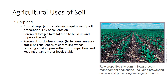Perennial forages, such as alfalfa, are in the ground for a few years. They may be harvested as hay to feed animals or be used for grazing. These crops cover the soil completely and so keep the soil from washing away. Perennial crops tend to build up and improve the soil and are better than annuals for maintaining or enriching soil organic matter. Perennial horticultural crops include fruits, nuts, and nursery stock. Plants stay in the ground for 3 to as many as 20 years. Many crops are clean cultivated to keep the ground bare and weed-free, while others are grown on sod or other soil cover. Challenges include controlling weeds, reducing erosion, preventing soil compaction, and keeping organic matter levels stable.